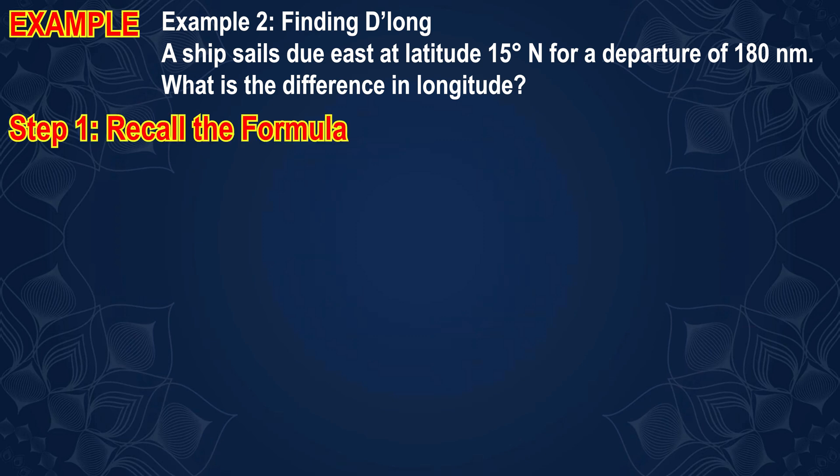Step 1: Recall the formula. D'long equals departure divided by the cosine of the latitude.